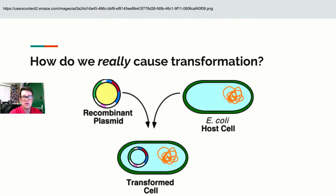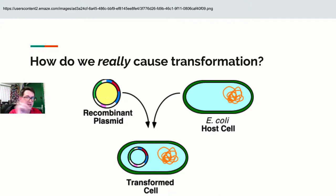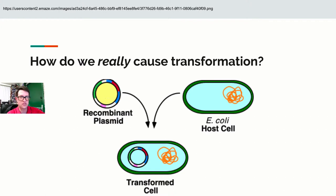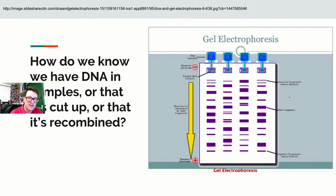The transformation process has several versions. A simple one is called heat shock. In college, a method called electroporation is used, and there's also a bacterium called Agrobacterium that can cause transformation in plants. When you take that recombinant plasmid — one with different parts — and insert it into a host cell via transformation, you now have the ability to express a trait that the bacterium couldn't express before.